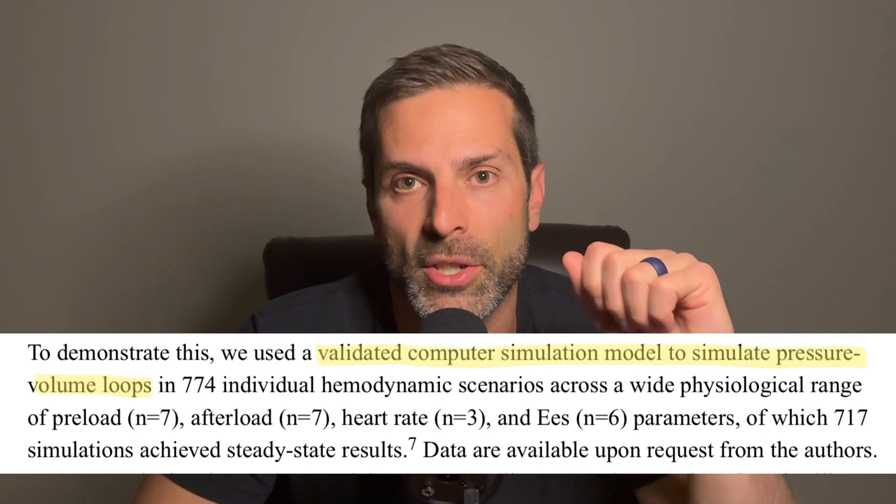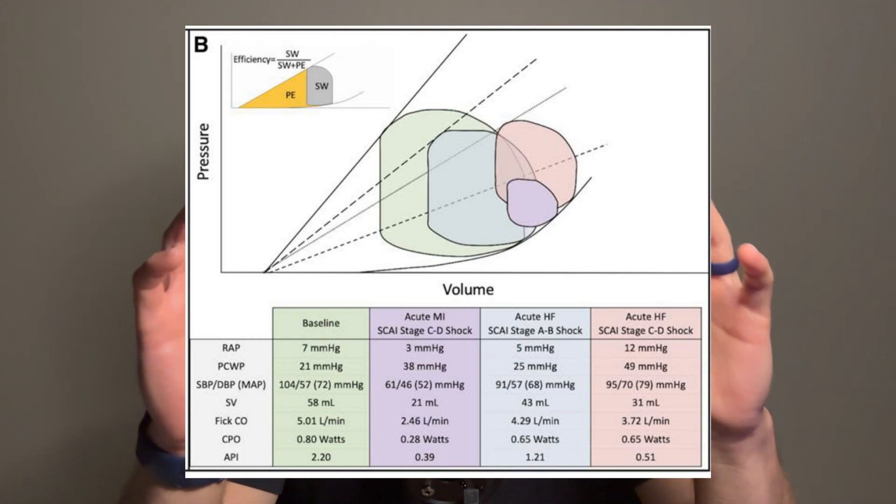More recently, in 2022, researchers used a validated computer simulation model to simulate pressure-volume loops. They ran hundreds of models and sorted out what pressure-volume loops would look like if the patient was in cardiogenic shock from acute MI versus acute decompensated heart failure with SCAI stage A/B or SCAI stage C/D. They produced APIs for these different groups that were wildly different from each other. I would really like to see that work done on actual individuals, not just models, since patients have complexities that can't be captured in a computer simulation.